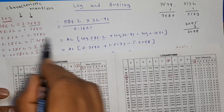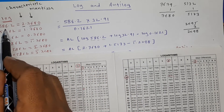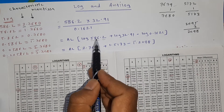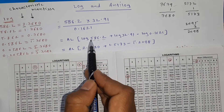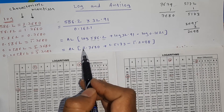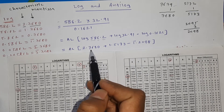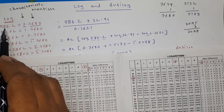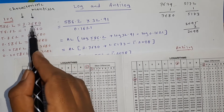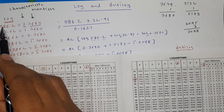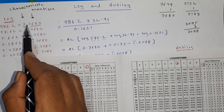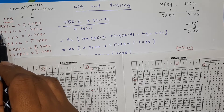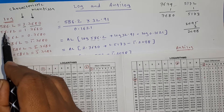This part is called the mantissa. We also have to give the characteristic. To find the characteristic, count the number of digits before the decimal point and subtract 1. For 586.2 there are three digits before the decimal, so 3 − 1 = 2. Therefore log of 586.2 = 2.7680. The mantissa 7680 stays the same; only the characteristic changes as the decimal point moves.